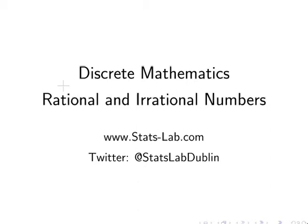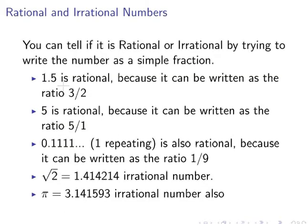In this presentation, we are going to look at rational and irrational numbers, and how to tell the difference between them. As a rule of thumb—and it doesn't work every time, sometimes it can be quite tricky—but if you can express it as a simple fraction of two integers, then it is a rational number. 1.5 is rational because it can be written as the ratio 3/2.